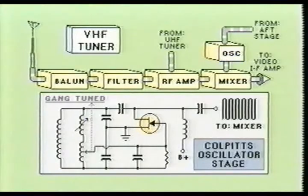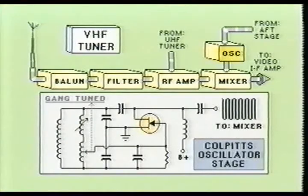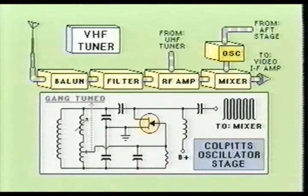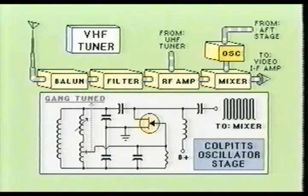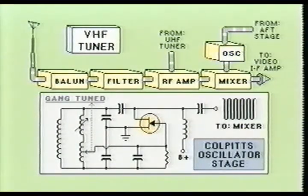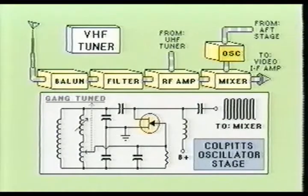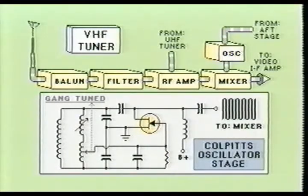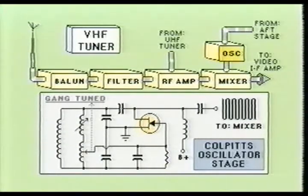The oscillator circuit used in the VHF tuner is designed to produce a VHF AC sine wave at its output. The frequency of the oscillator stage will be placed above the incoming RF signals by an amount equal to the intermediate frequencies used by the television receiver design. The amplitude of the oscillator voltage will be many times larger than the RF input signal in order to obtain the maximum conversion gain. The Colpitts oscillator configuration is the most commonly used oscillator circuit in the VHF tuner assembly. The gang tuned coil in the oscillator stage is part of the channel selection circuitry.